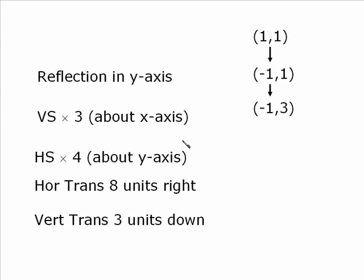A vertical stretch by a factor of 3 only affects the y-coordinate. So that point will now transform to negative 1 comma 3. Now we do the horizontal stretch by 4, but only the x-coordinate gets multiplied by that, so negative 4 comma 3. When we take it 8 units to the right, only the x-coordinate gets affected, so it becomes 4 comma 3. You add 8 on to the x, but the y is unchanged. Finally, the vertical translation of 3 units down would be 4 comma 0.